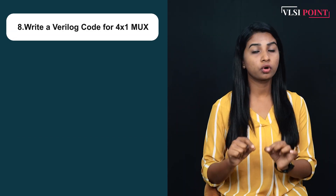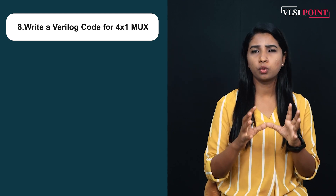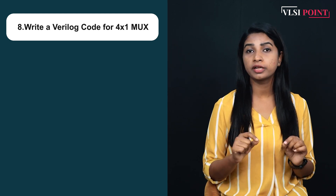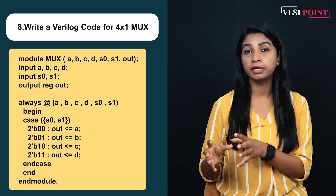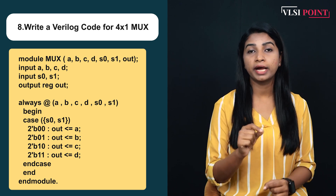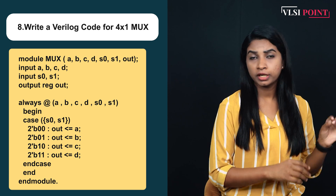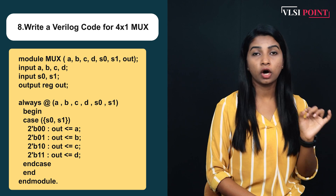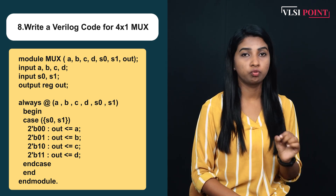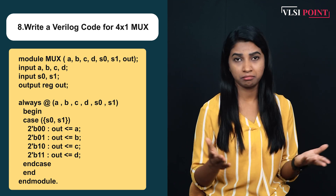Coming to the eighth question: you have to write a Verilog code for a 4-to-1 multiplexer. It's a very basic question — I have told you multiple times how you can write a multiplexer code. First try to write it yourself. When the select input S0S1 is 00, the output is A; for 01 it is B; for 10 the output is C; and for 11 the output is D. It's a very simple code and you can write it in multiple ways.